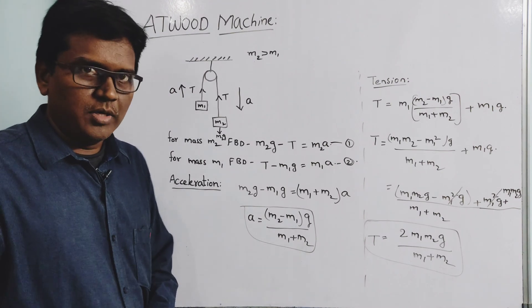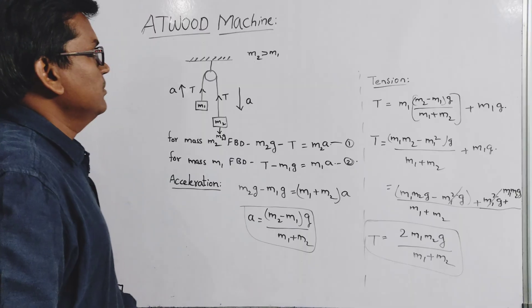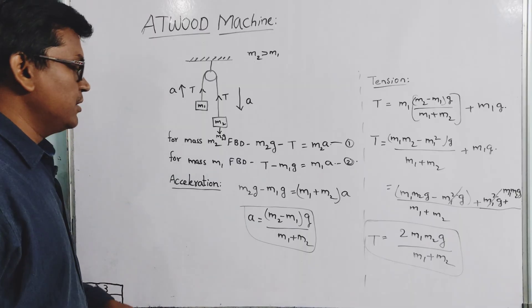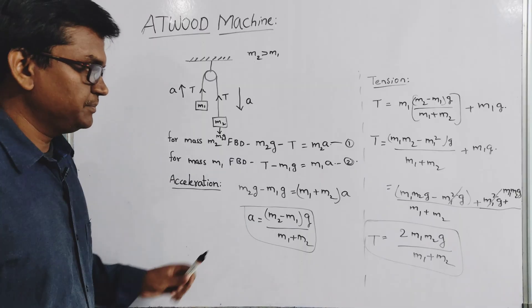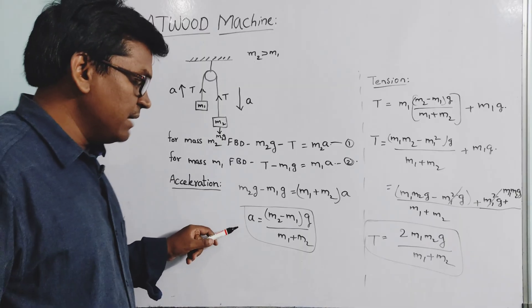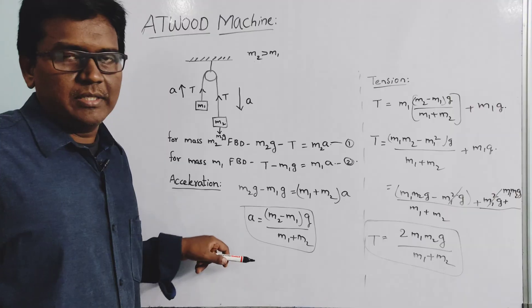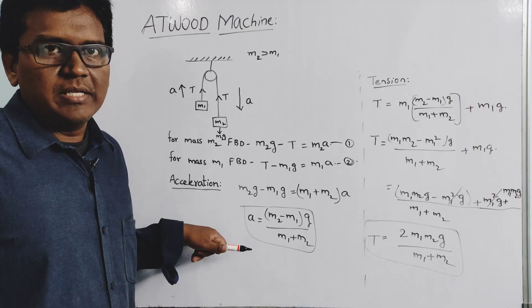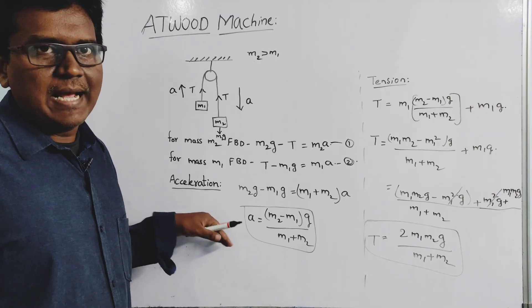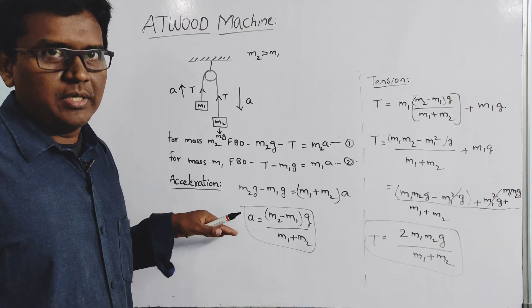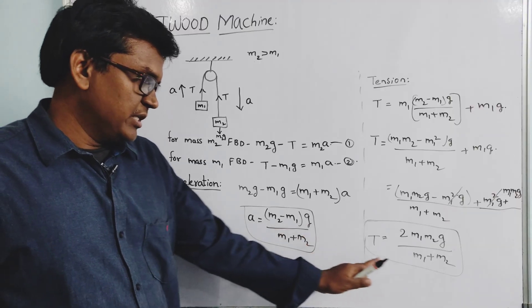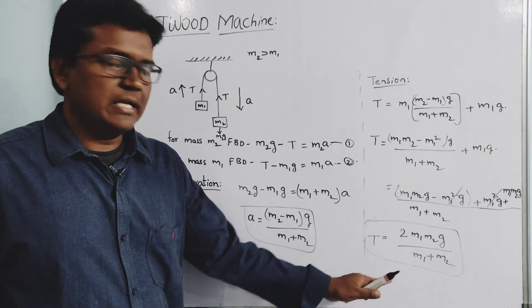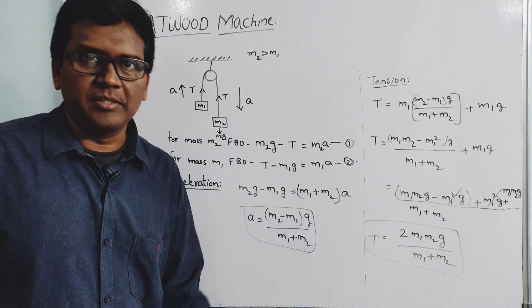So with the Atwood machine we have derived two key equations: one for finding the acceleration of the blocks, and another for finding the tension in the string. Thank you.